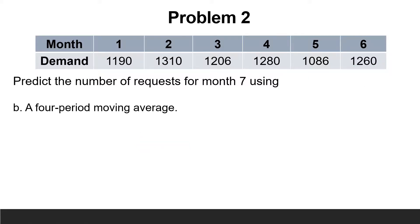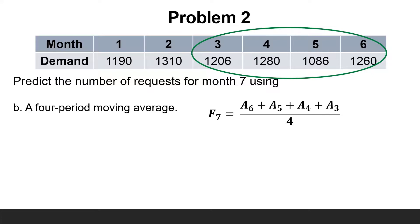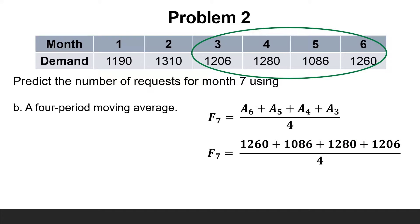The second requirement is to calculate the forecast for month 7 using the 4-period moving average. This means using the most recent 4 months, which are months 6, 5, 4, and 3. So F7 = (A6 + A5 + A4 + A3) / 4 = (1260 + 1086 + 1280 + 1206) / 4 = 1208.